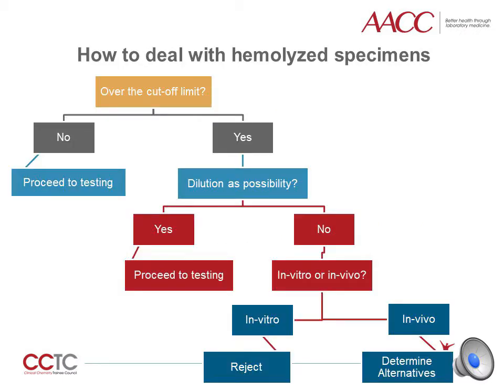The way to correct hemolysis largely depends on the analyte and the instruments in your laboratory. One way to deal with hemolyzed specimens is to first determine if the H-index is above the hemolysis cutoff limit for the analyte of interest. If the H-index is below the cutoff, you may proceed with testing. However, if the H-index is above the cutoff limit, determine whether you are able to dilute the sample by referring to the manufacturer guidelines. If dilution is not acceptable, determine whether it is in vitro or in vivo hemolysis. This can be accomplished by measuring haptoglobin. Decreased concentrations of haptoglobin are pronounced and a specific effect in in vivo hemolysis, whereas haptoglobin levels remain unchanged in the in vitro hemolysis setting.